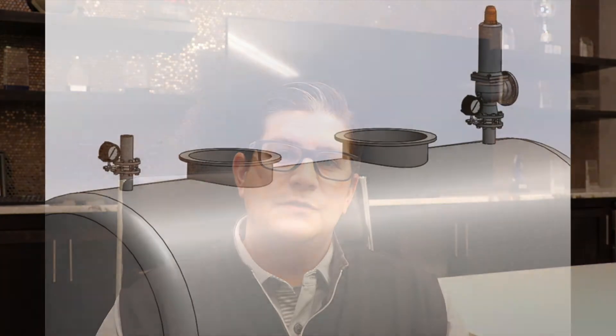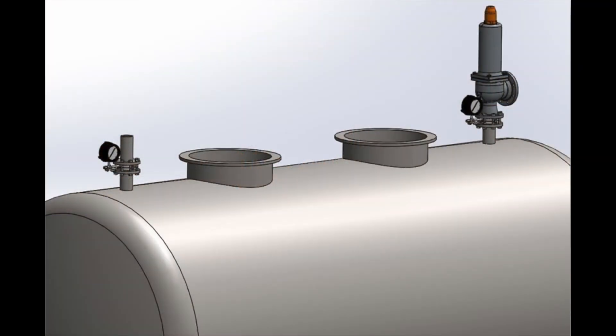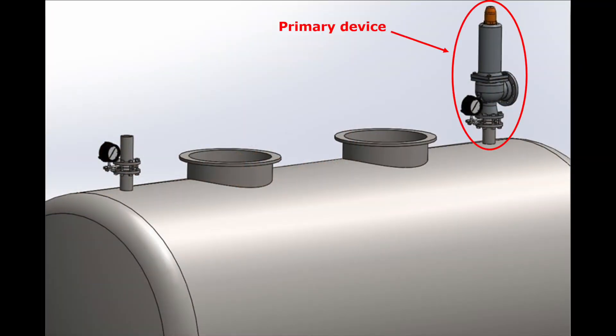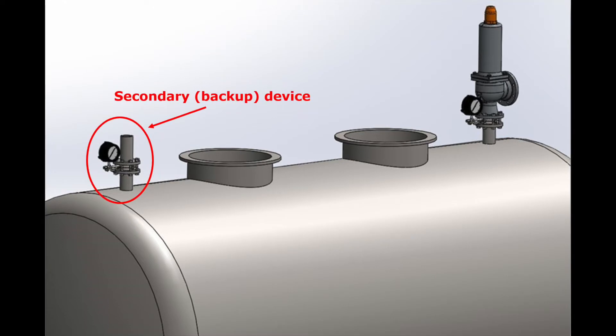The second type of scenario is when a rupture disc is used as a secondary device. In this case, you'll have a primary relief device, which may be a rupture disc, pressure relief valve, or pressure safety valve. The secondary device is meant to be a backup to the primary device. Whenever you're using a rupture disc as a secondary relief device, it's important that the rupture disc's set pressure shall not exceed 105% of the maximum allowable working pressure.